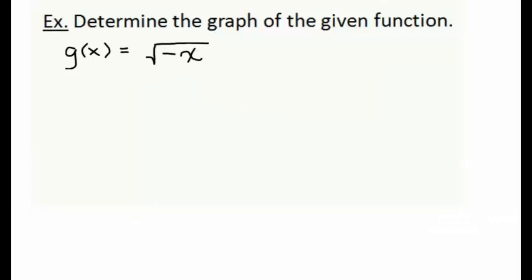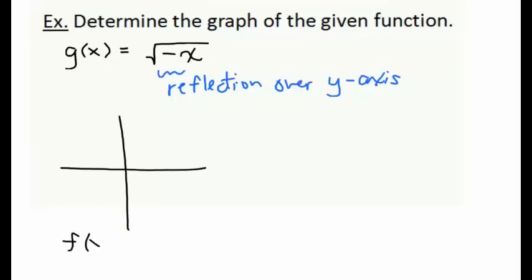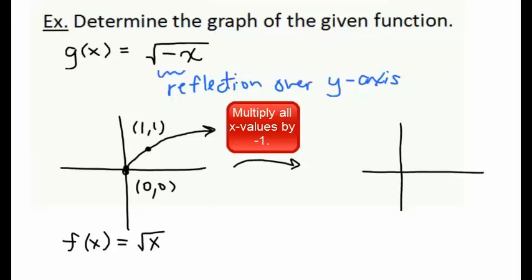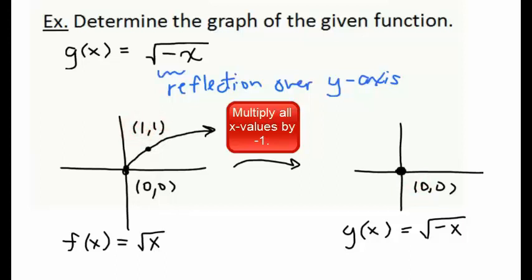In our last example, we're going to determine the graph of g(x) = √(-x). Since the negative sign is on the inside of our square root, it's going to affect all of our x-values, so we expect a reflection over the y-axis. Starting from the usual square root function, to reflect over the y-axis we multiply all x-values by -1. The origin remains unchanged. The point (1, 1) becomes (-1, 1). So our reflection over the y-axis opens to the left.